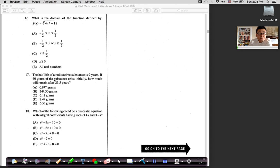All right, let's continue. Number 16, what is the domain of the function defined by that thing? Okay, you see a third root. It's a very ugly-looking function. fx is equal to third root of 4x squared minus 1.